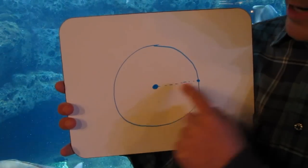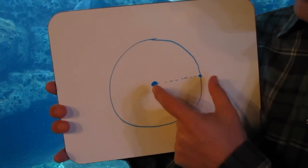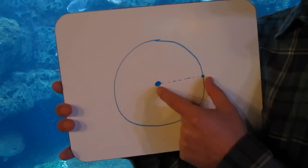This dotted line connecting the center to the edge of the circle is called the radius. If you found the distance from these two points, it would be the radius.